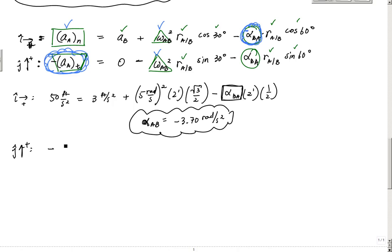So I have this negative AAT is equal to 0, so I'm not going to write the 0, negative 5 radians per second quantity squared times 2 feet times the sine of 30, which is 1 half, minus alpha BA, which is minus 3.70 radians per second squared times 2 feet. So negative minus, or minus minus 3.7, which will make it a positive, but here, 2 feet, and then the sine of 60, which is square root of 3 over 2 right here.